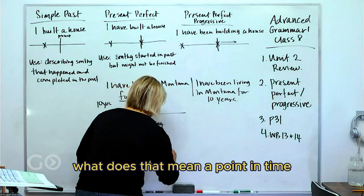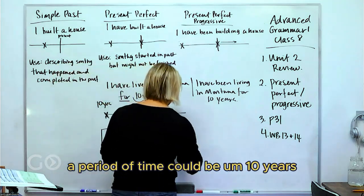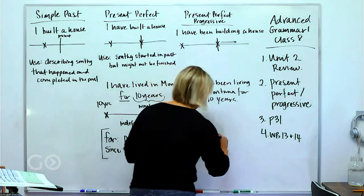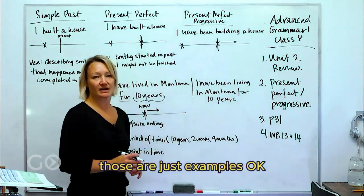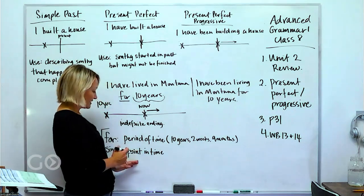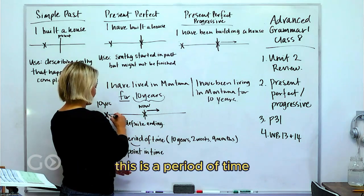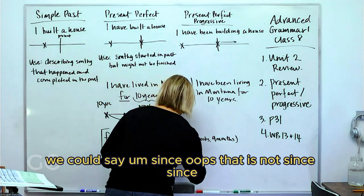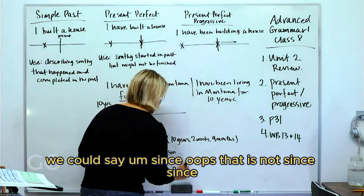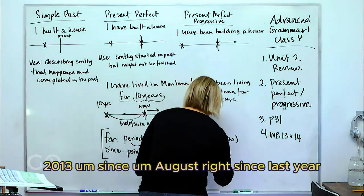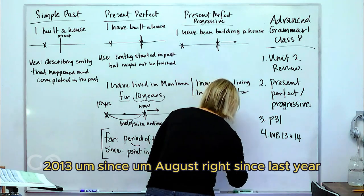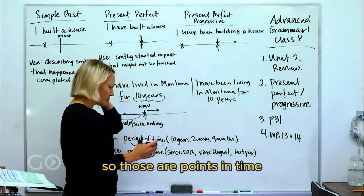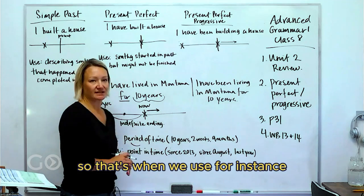A period of time could be 10 years, two weeks, nine months, etc. A point in time is just one point. So we say 'I have lived in Montana since 2013,' or 'since August,' or 'since last year.' Those are points in time. We don't mix 'for' and 'since' up — they don't sound right if you swap them.